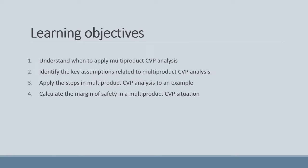Our learning objectives for this video are: first, to understand when it is appropriate to apply Multiproduct CVP Analysis; next, to revisit our underlying CVP assumptions and understand which assumptions are critical to Multiproduct CVP; thirdly, to explore the steps in Multiproduct CVP Analysis and apply these to a basic example; and finally, to calculate the margin of safety in a Multiproduct setting.